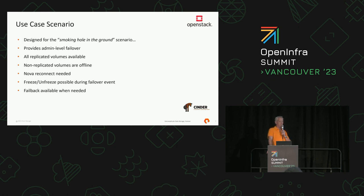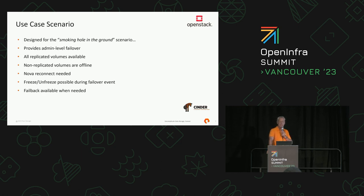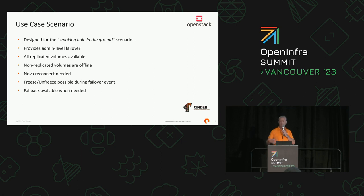Cinder replication was very much designed for a specific use case in its current incarnation, and that was basically your back-end storage device blowing up — literally a smoking hole in the ground. What Cinder replication gives you is the ability, as an admin, to fail over from that smoking hole in the ground to the replicated array. In doing that, any volume that has been replicated — and we'll discuss how that's replicated shortly — all those volumes remain available to Nova. You do have to reconnect Nova because the back-end connection, whether it be iSCSI or Fibre Channel, has to be reconnected with different IQNs and WWNs, but your data is still there.